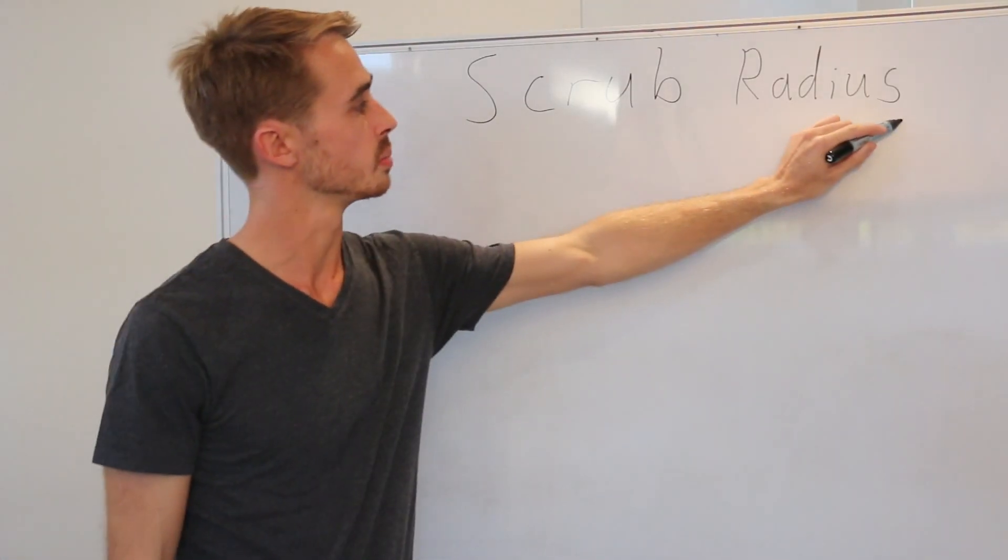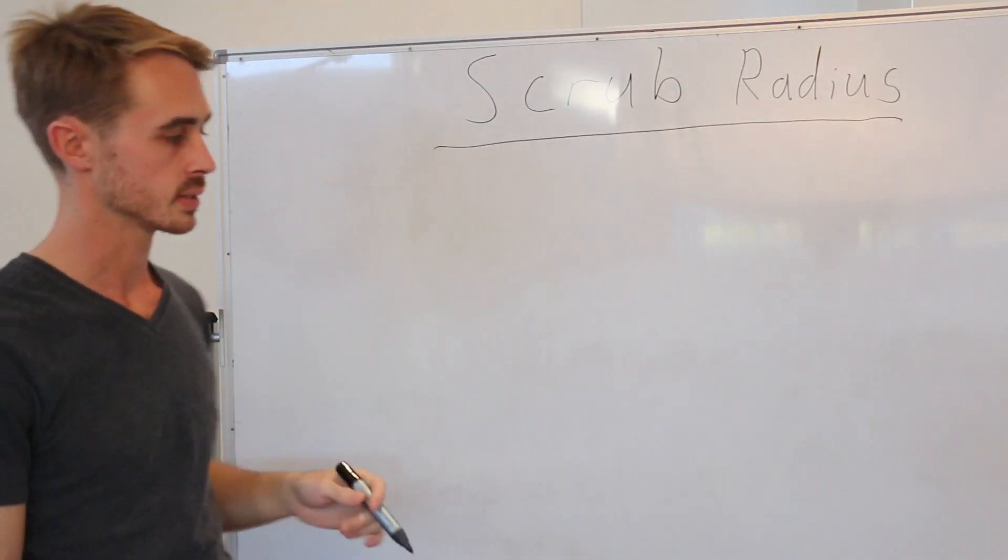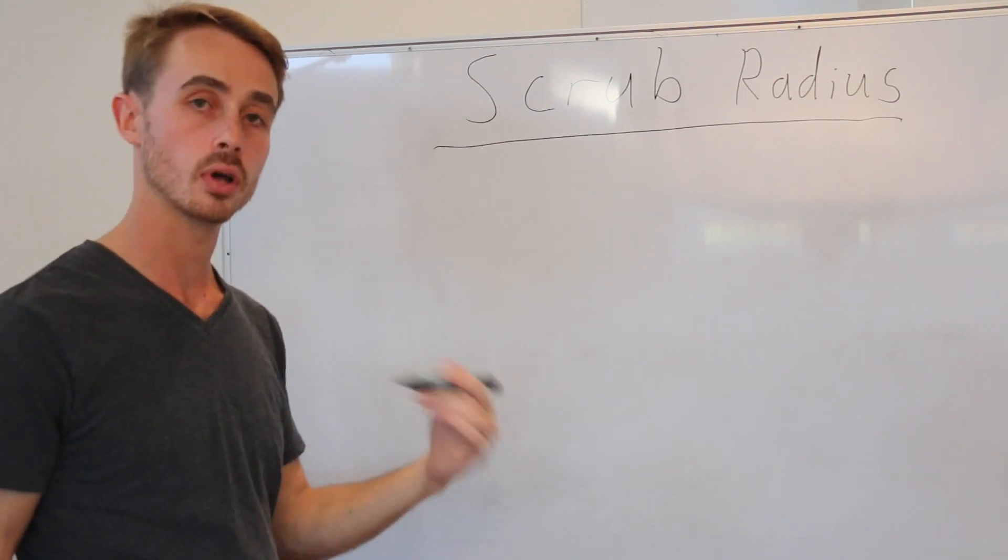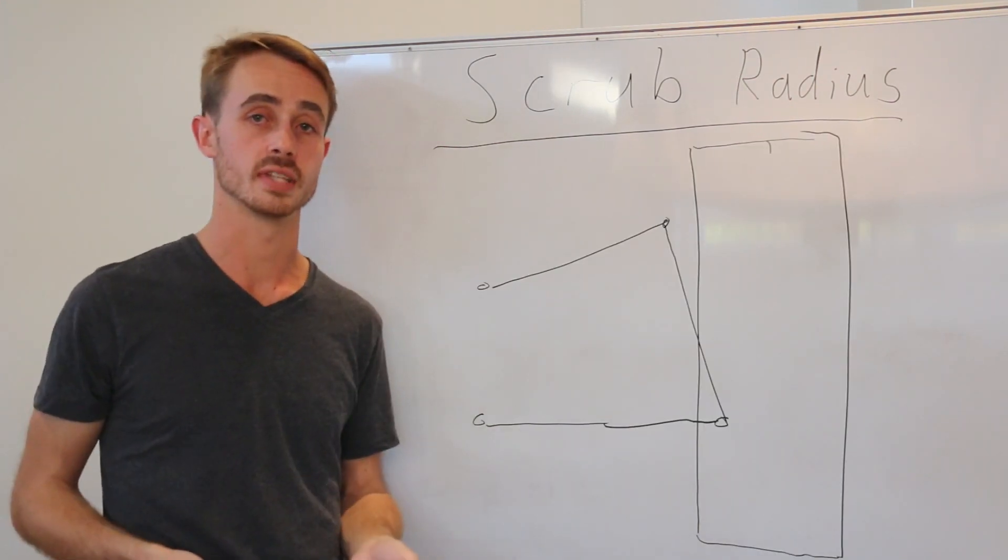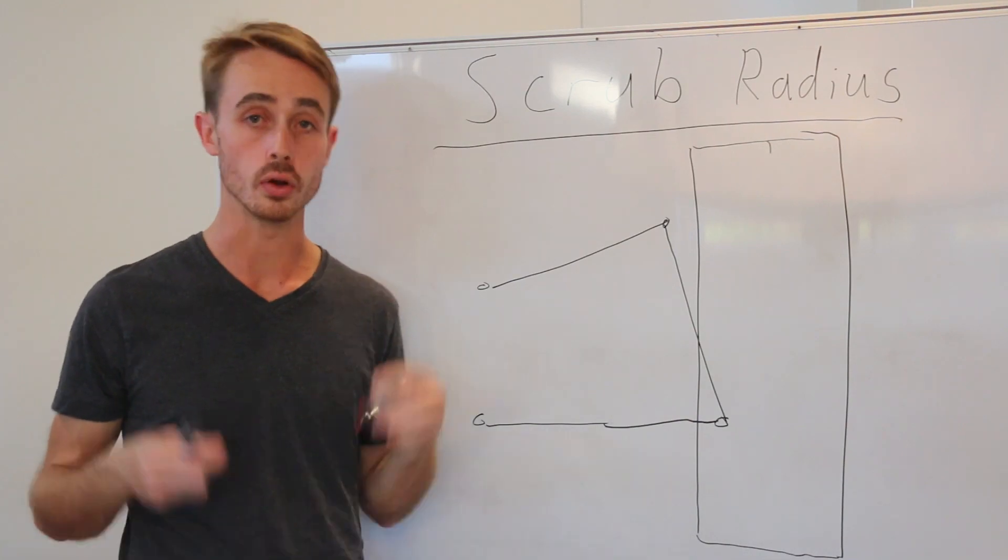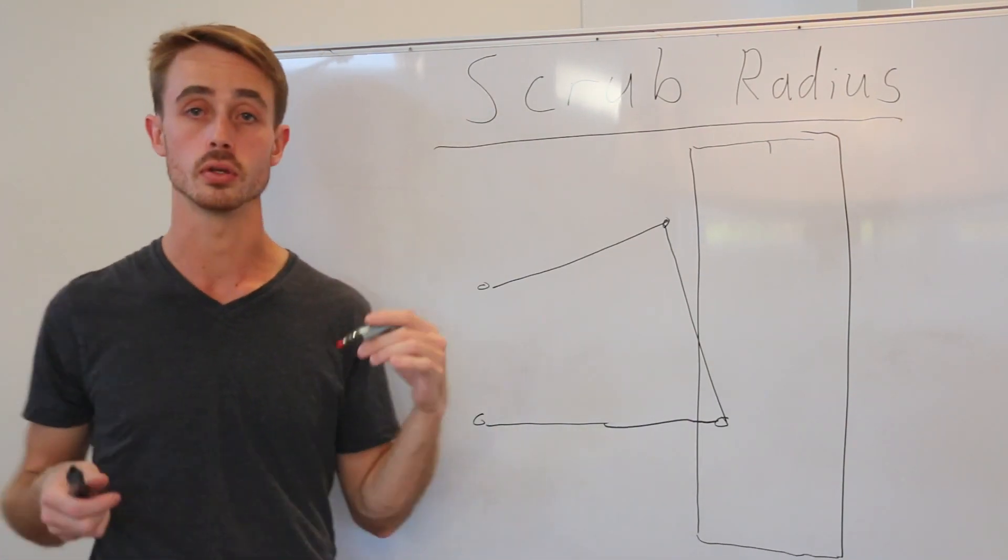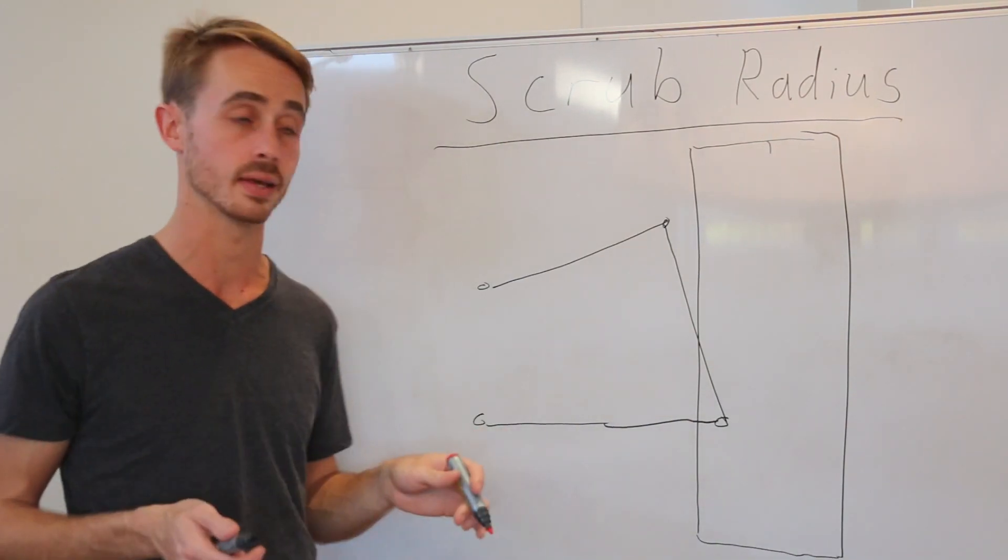So today's lesson is going to be on scrub radius. Now scrub radius is a very simple concept. As with most suspension concepts, this is easiest to explain using a double A-arm configuration, although the principles apply the same whether you're using this or a McPherson strut or anything like that.